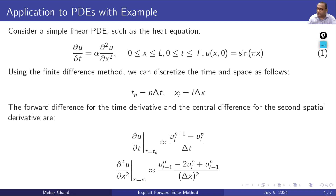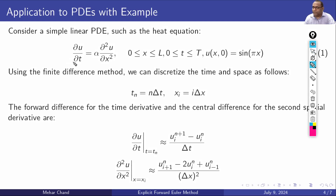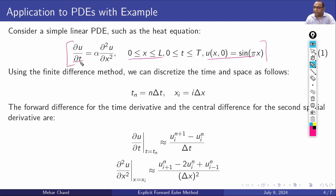Here we are considering a very simple linear partial differential equation — the heat equation, which we have chosen to solve using different methods. In this example, the equation is: del u / del t = alpha * del²u / del x², where x lies between 0 and L, t lies between 0 and T. The initial condition is u(x, 0) = sin(pi * x). We will implement our method to solve this initial value problem in partial differential equations.